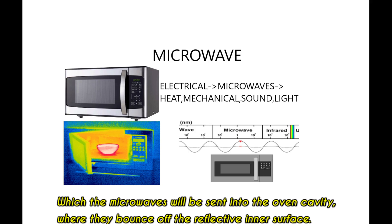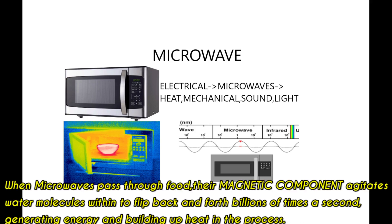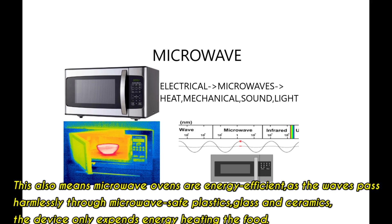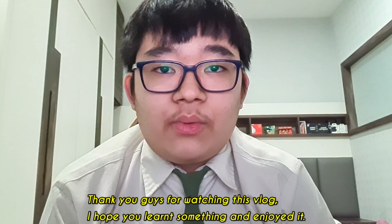The microwaves are sent into the oven cavity, where they bounce off the reflective inner surface. When microwaves pass through food, their magnetic component agitates water molecules to flip back and forth billions of times a second, generating energy and building up heat. This also means microwave ovens are very energy efficient, as the waves pass harmlessly through microwave-safe plastics, glass, and ceramics — the device only expends energy heating the food.